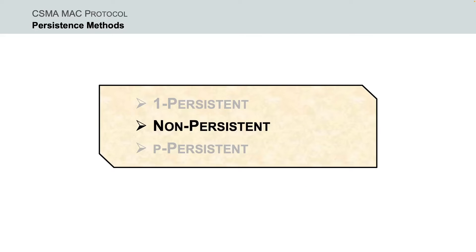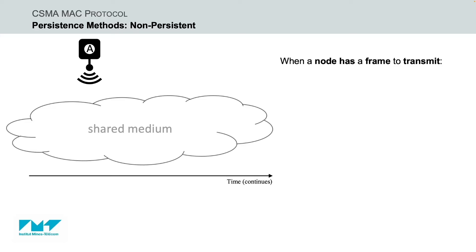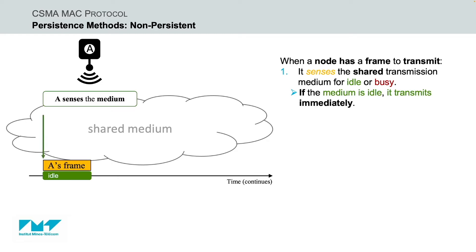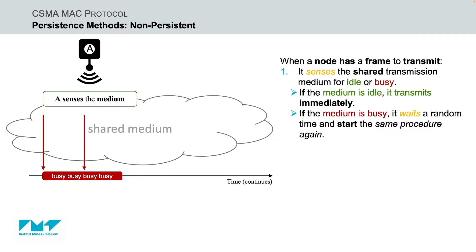Next we have the non-persistent CSMA method. Under the non-persistent method, when the transmitting node has a frame to transmit, it senses the shared transmission medium to check if it is in idle or busy state. If the shared medium is idle, the node transmits its frame immediately. However, if the shared channel is busy, it waits a random amount of time and repeats the whole logic cycle again.